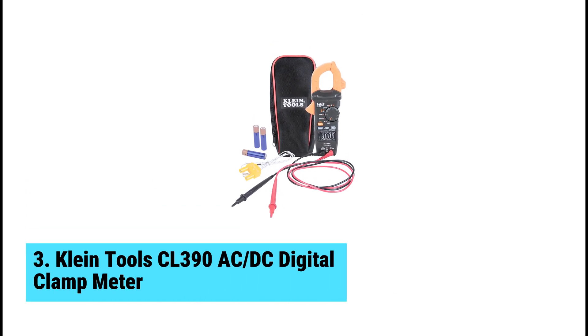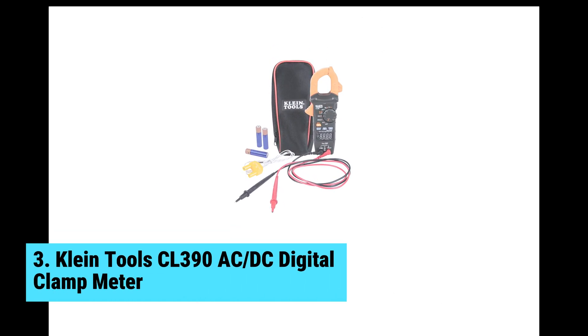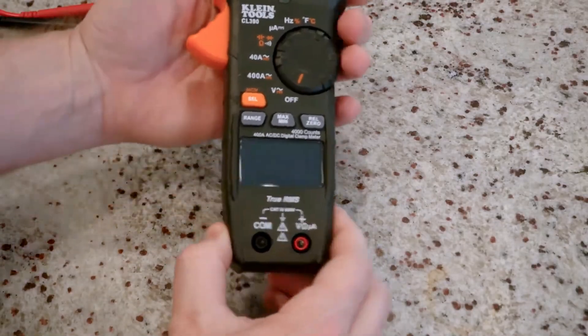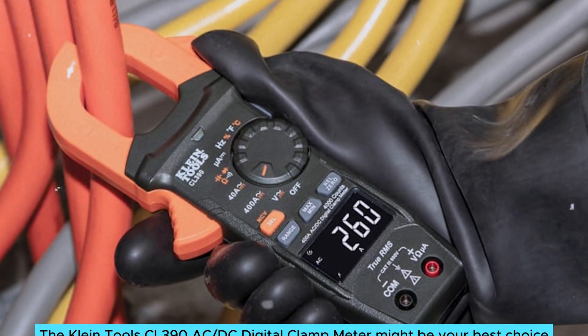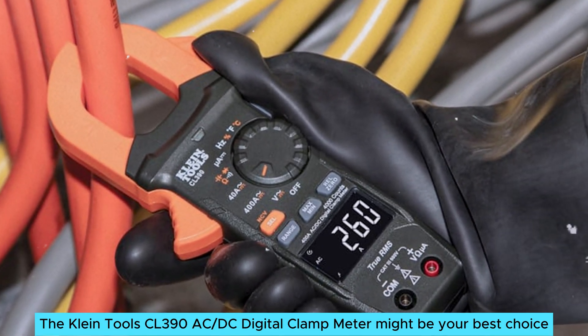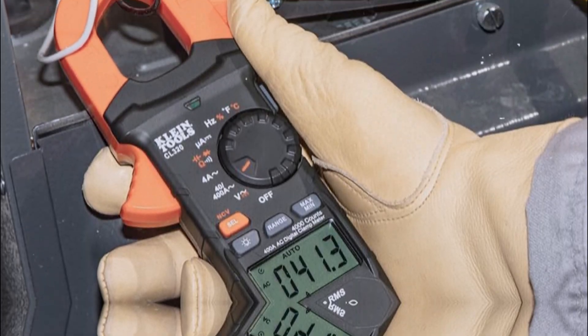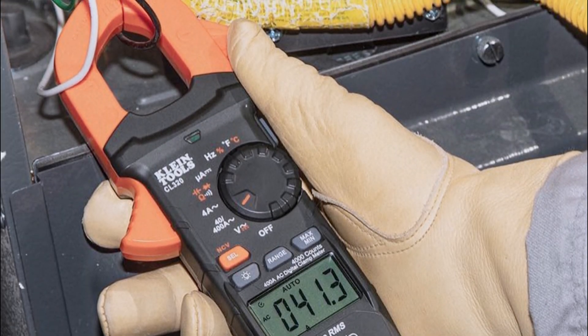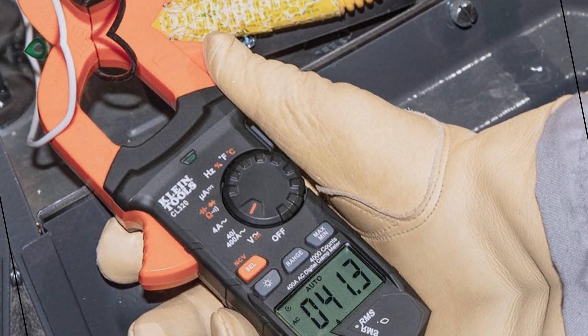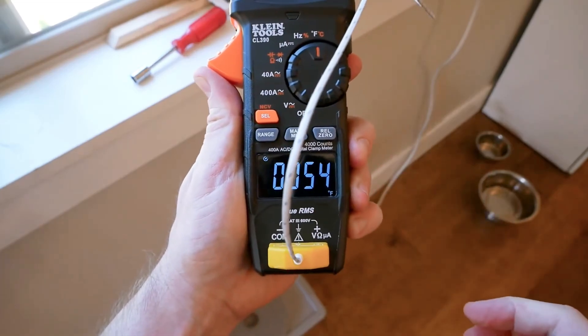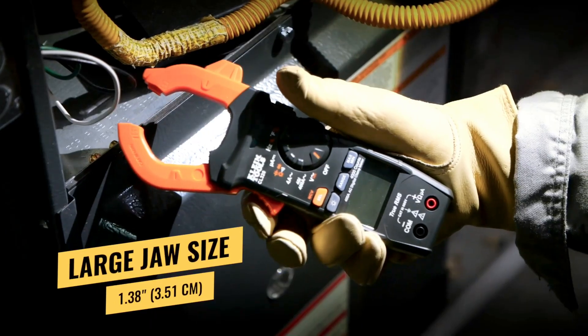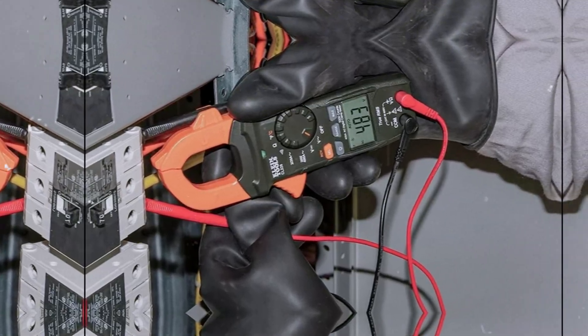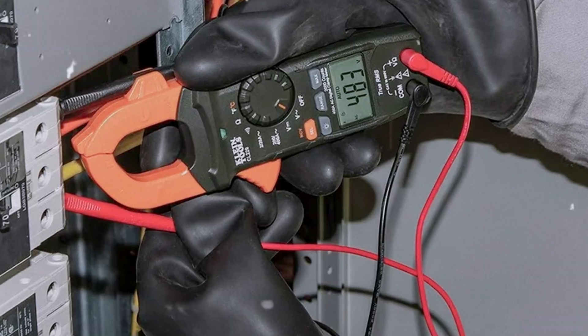At number three, we have Klein Tools CL390 AC and DC Digital Clamp Meter, the best clamp digital multimeter. If you're seeking a reliable clamp meter, the Klein Tools CL390 AC and DC Digital Clamp Meter might be your best choice. This versatile tool stands out in a crowded market, offering features that simplify your testing process. One major highlight is the side-mounted trigger. It allows easy opening of the jaws with just one hand. This design is perfect for those tight spots.